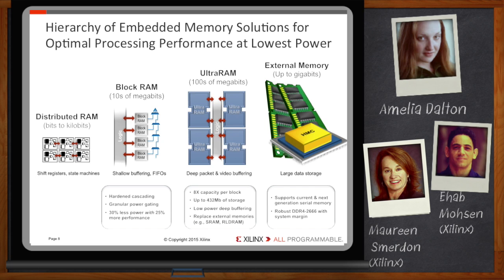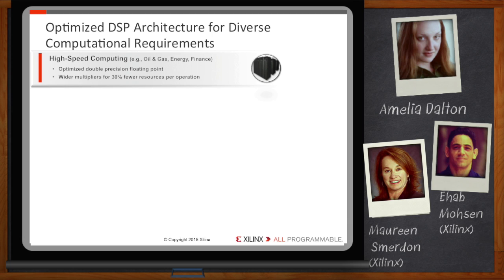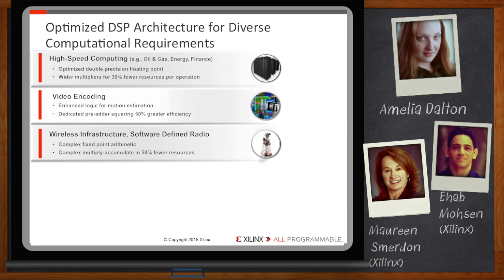Switching to processing and computation: digital signal processing is a huge deal for many applications, from wireless to data centers. So, Ahab, where are we on the DSP front? Applications across the board are demanding signal processing, but the types of computations can differ, ranging from single precision to double precision floating point to fixed point, each of which uses DSP blocks differently. In the case of high-speed computing, UltraScale Plus DSP blocks have wider multipliers that boost double precision floating point efficiency by a third over 7 series. For video encoding, there's dedicated logic for motion estimation that cuts DSP block usage in half. And for applications like wireless, new connectivity and logic in each DSP also cuts block usage in half for complex multiply-accumulate calculations.